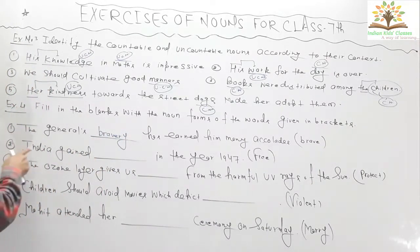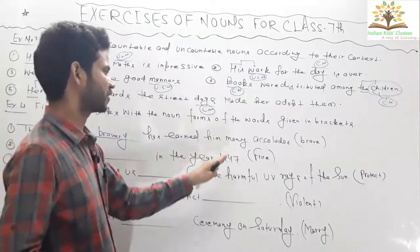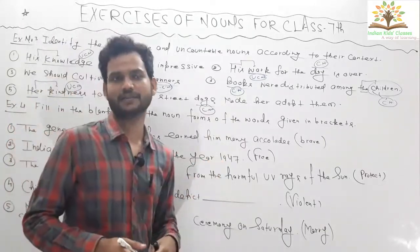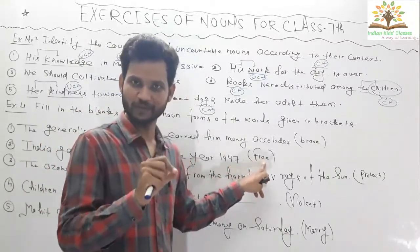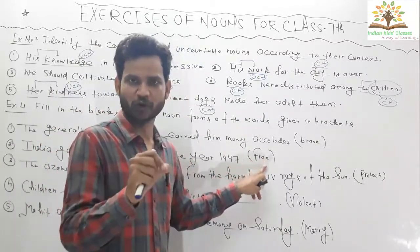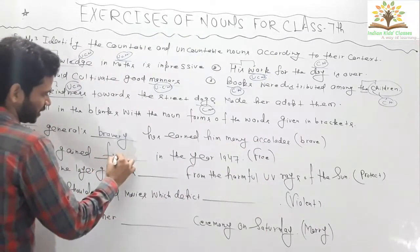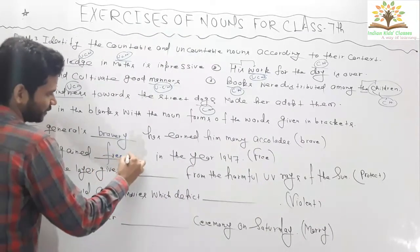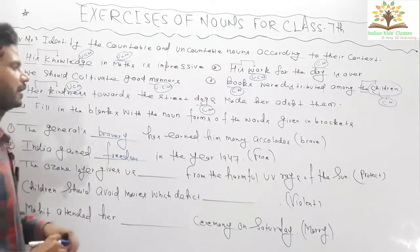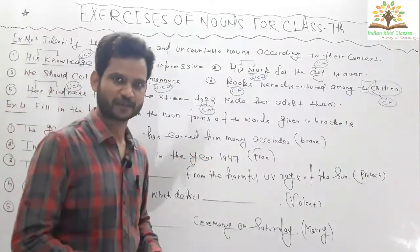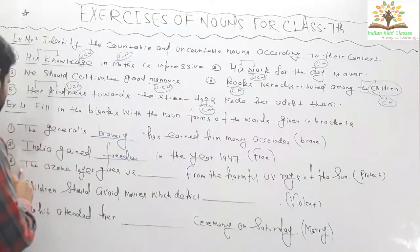Question two: 'India gained ___ in the year 1947.' The given word is a verb — through verbs we can make nouns. Through 'free' we can make freedom. So India gained freedom in the year 1947.